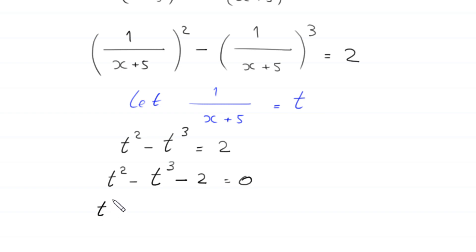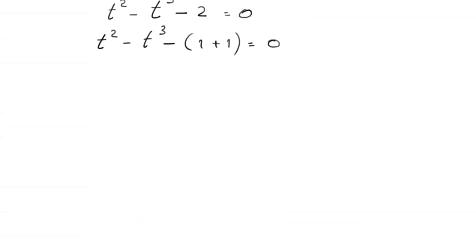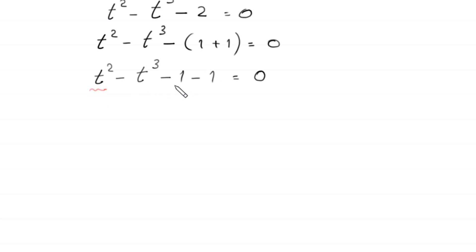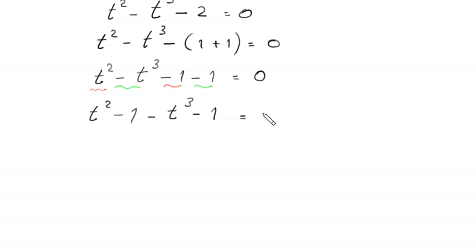Next, t² − t³ − 2 = 0, where this 2 can be written as 1 + 1, giving t² − t³ − (1 + 1) = 0. We then write this as: negative t³ times 1 and negative times this 1, so we combine terms to get (t² − 1) − (t³ + 1) = 0.